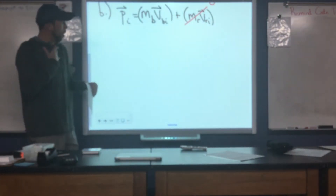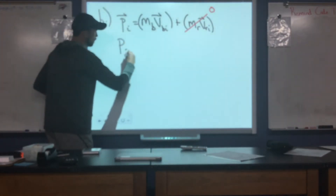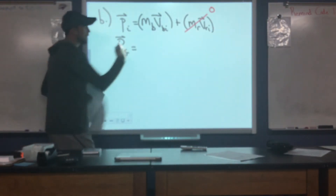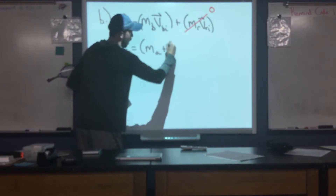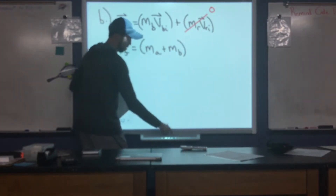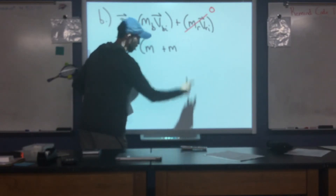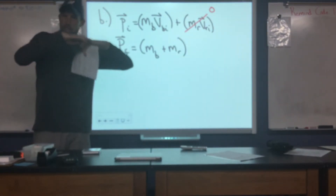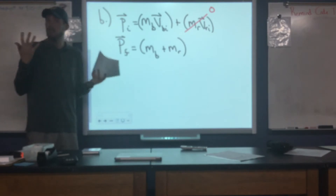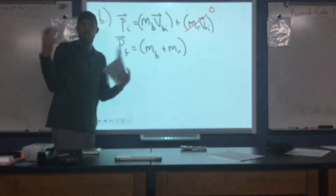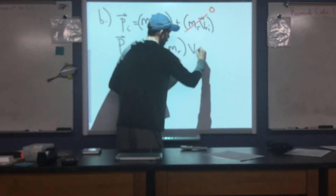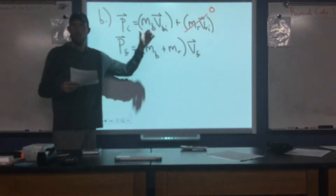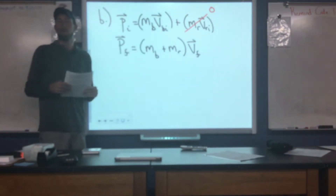And then after the collision, for the final momentum, we are told that the cars collide and stick together. So what that means is that we can take the masses of both objects — blue and red — and add those together. Because the objects are stuck together after the collision, they're going to have the same velocity. So we can treat them as if they're one object with one final velocity. These equations show what's going on with momentum prior to and after the collision.